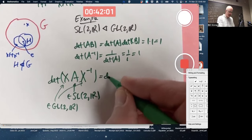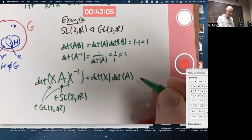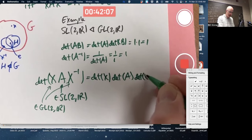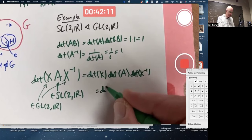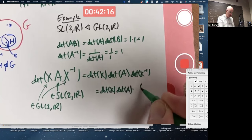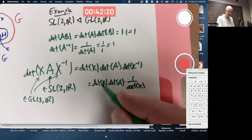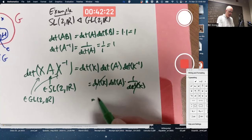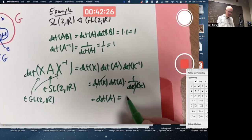Use a property of determinants again. Continue using property of determinants. Determinant of X inverse is one over the determinant of X. These are a bunch of numbers. Cancel those two numbers. You get the determinant of A. And since I'm assuming A is in SL(2,R), its determinant is one.